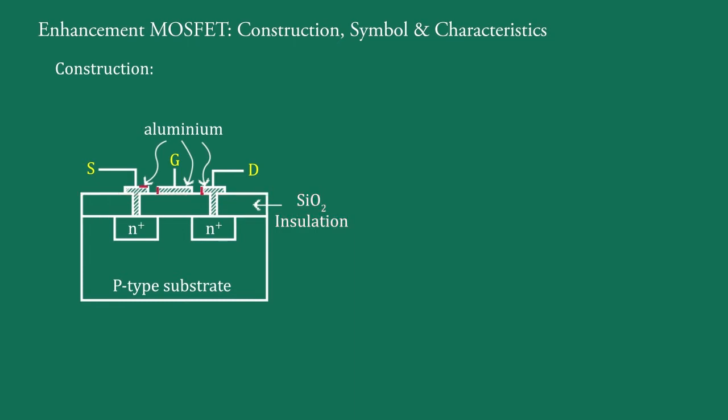Then, a metallic layer of aluminum is overlaid on the oxide layer like this. This part of the aluminum layer acts as gate G, and this part of the aluminum layer connects to this N-plus region, and the lead carried out with it is called source terminal.